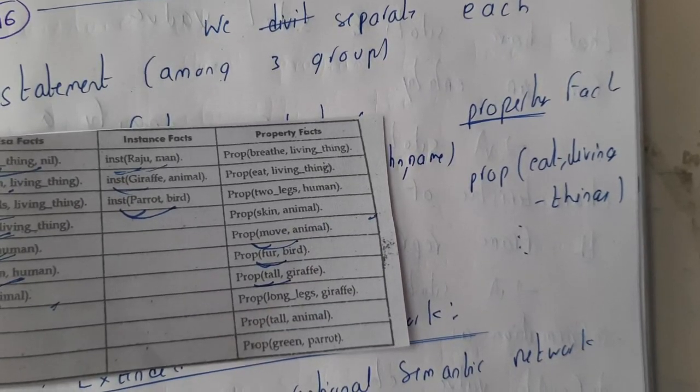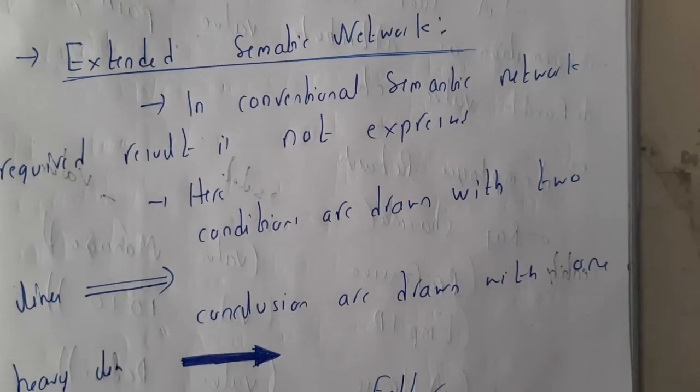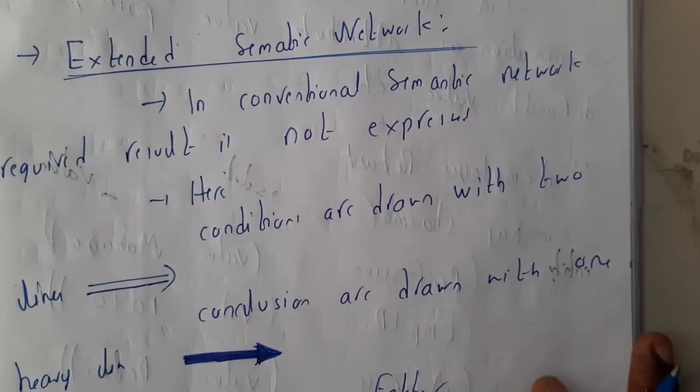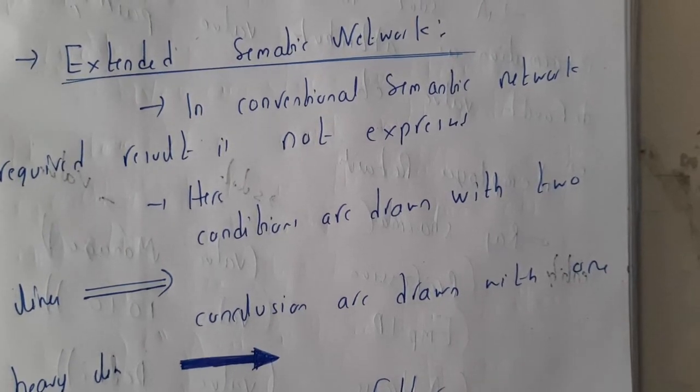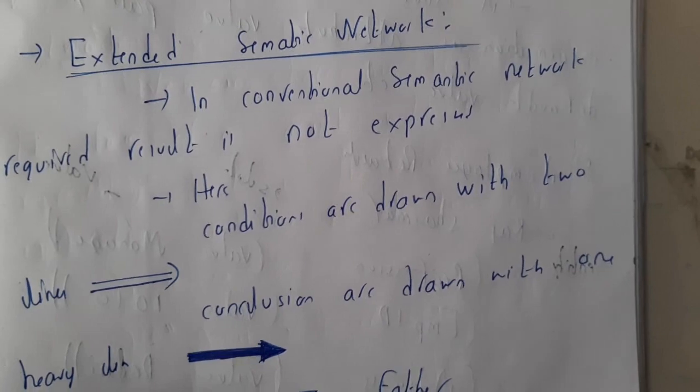Now let us go through extended semantic networks. Extended semantic networks are nothing but in our previous normal semantics we didn't conclude anything, right? We used to chain like that only. If you take this example...